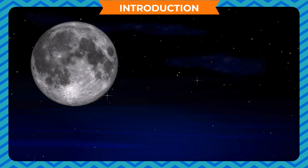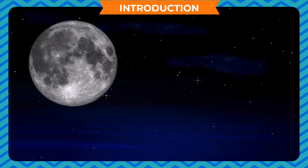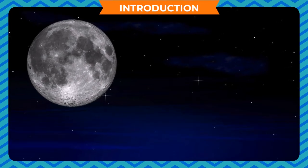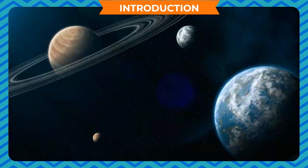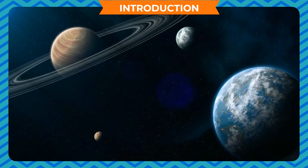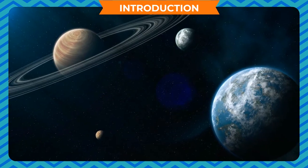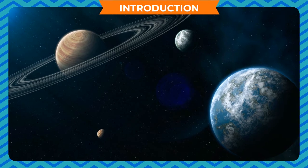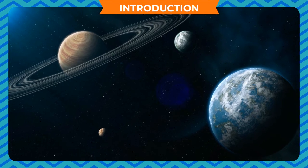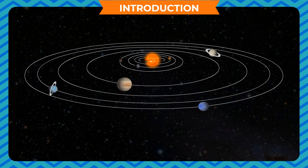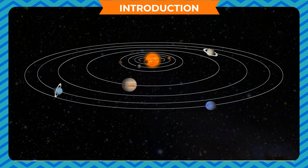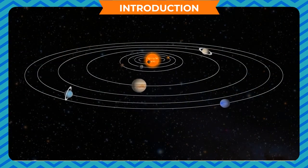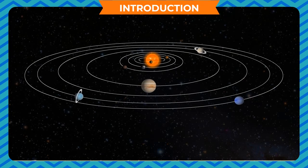Celestial bodies is the collective term given to the moon, stars and the planets. All celestial bodies are not the same. They might be different from each other in some or the other way. Let us discuss them in detail.